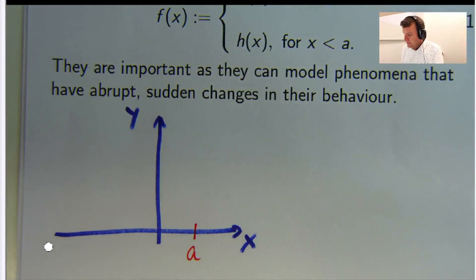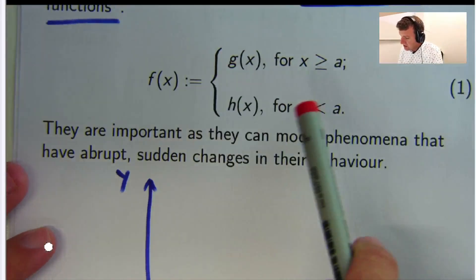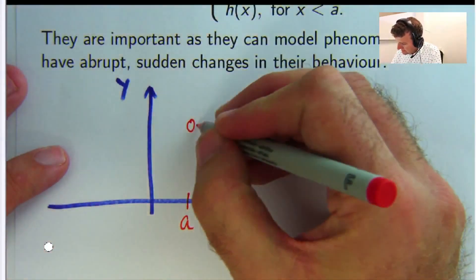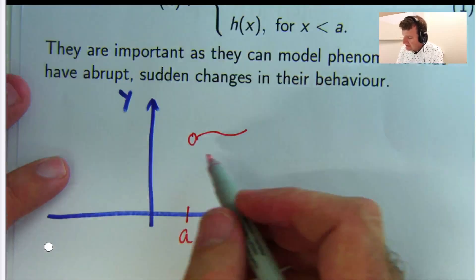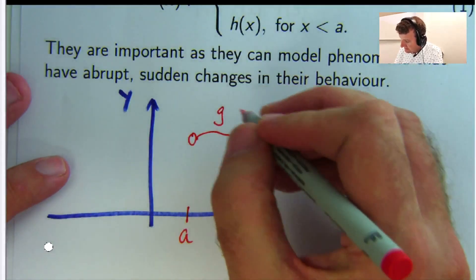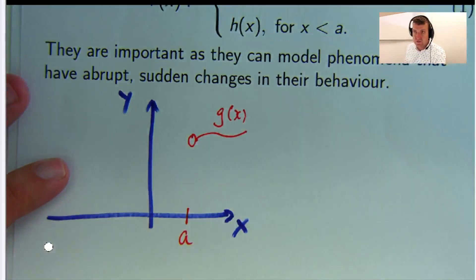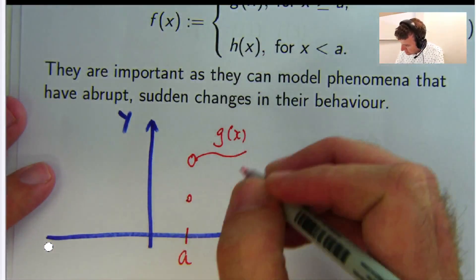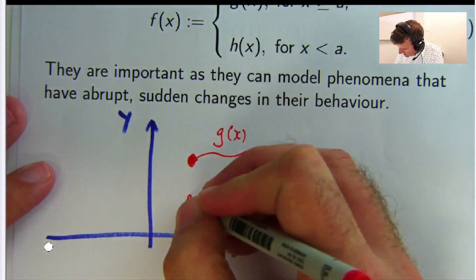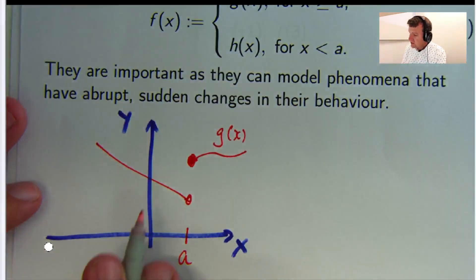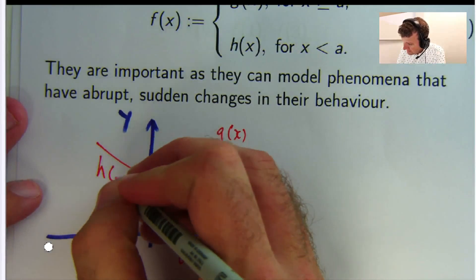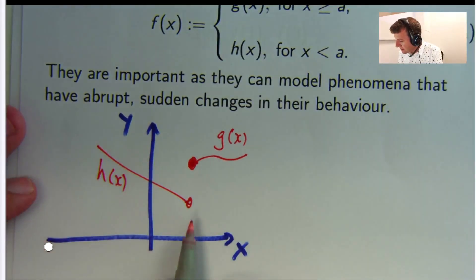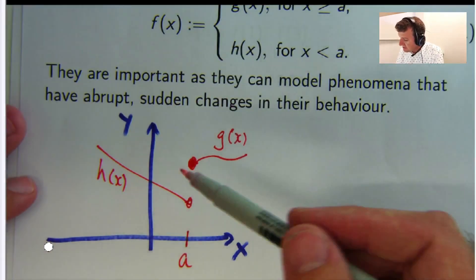what this says is that on the right hand side of a, your function satisfies a certain rule, here it's g(x). And then on the left hand side, that should be coloured in and that should be open, the function might look like this. So this is your h(x). You can see as we move from left to right there's an abrupt change here. In this picture there's a jump,